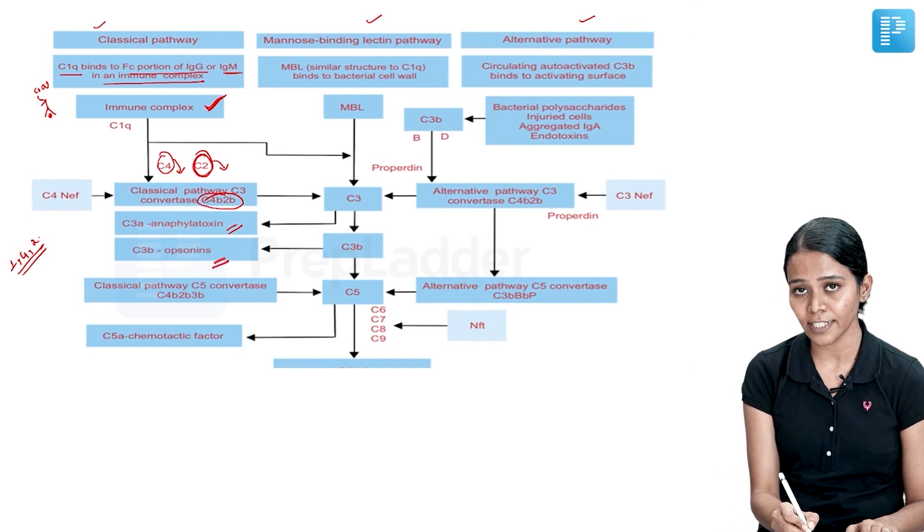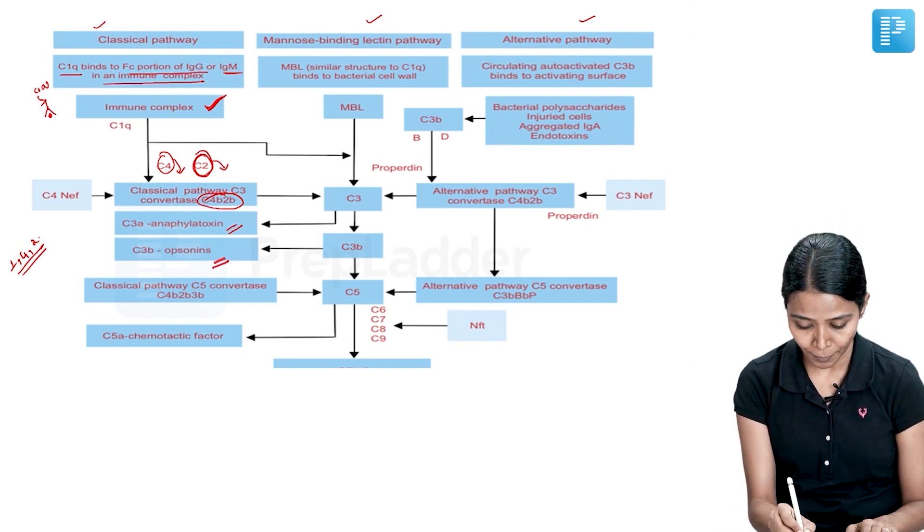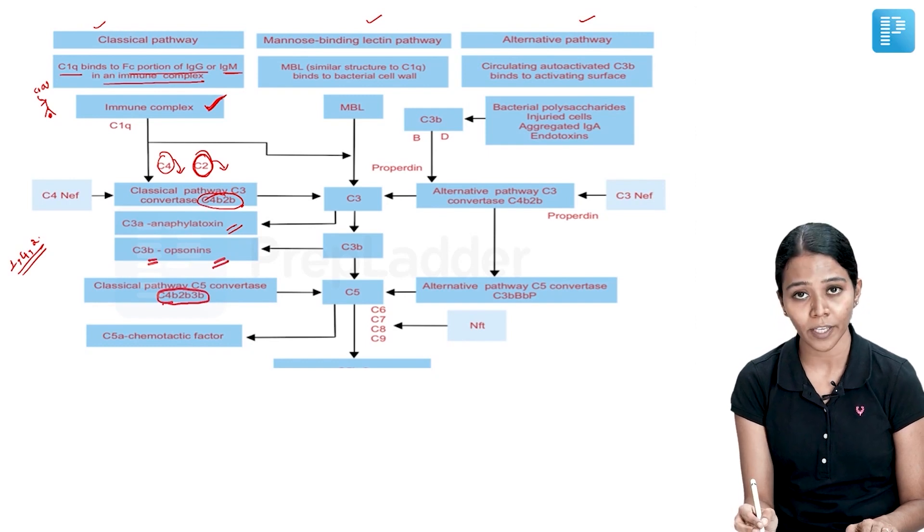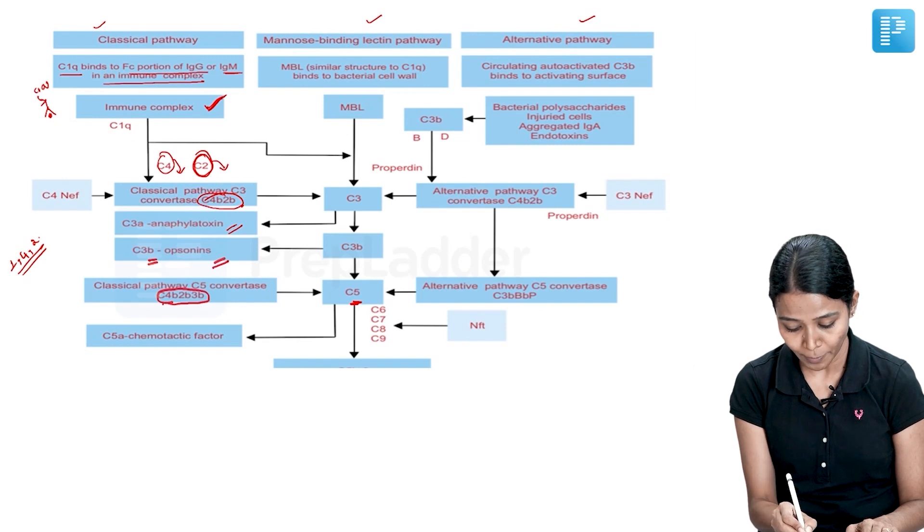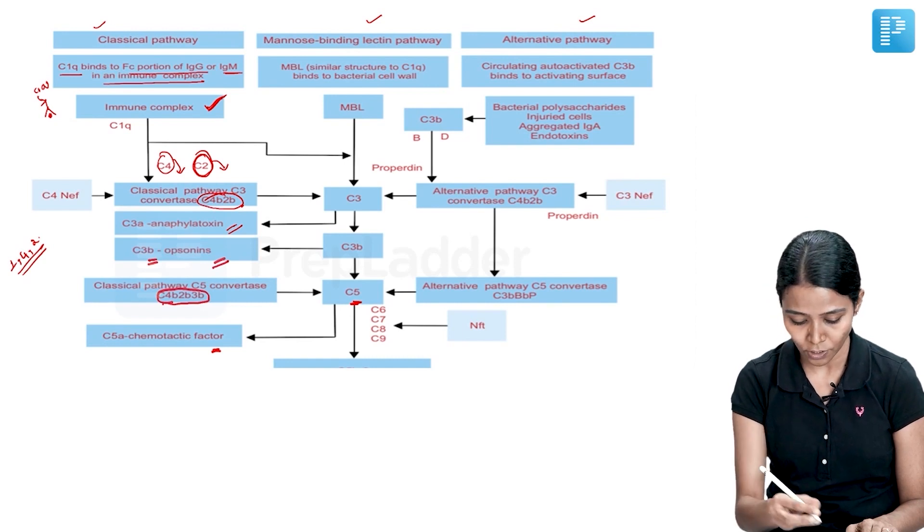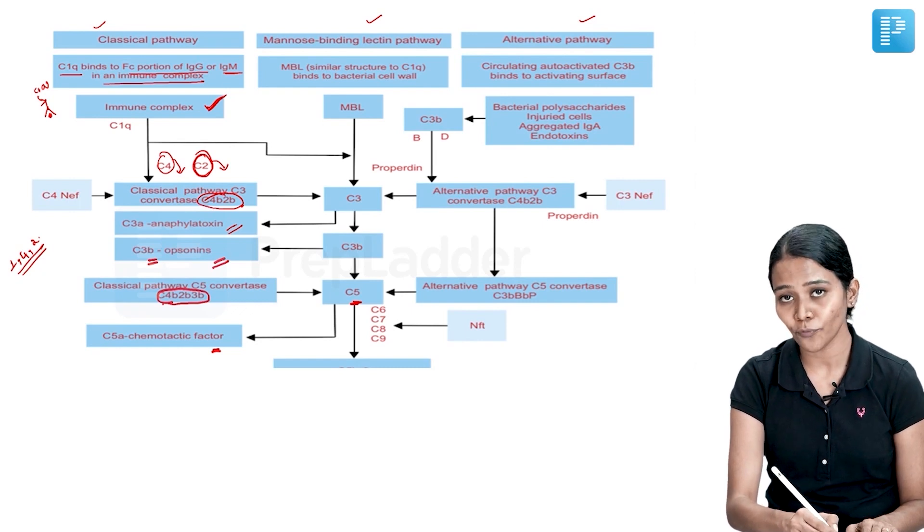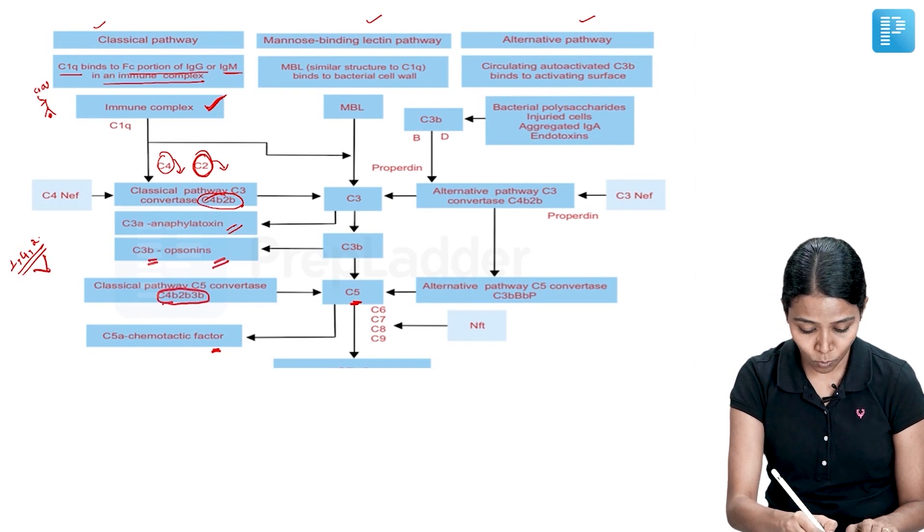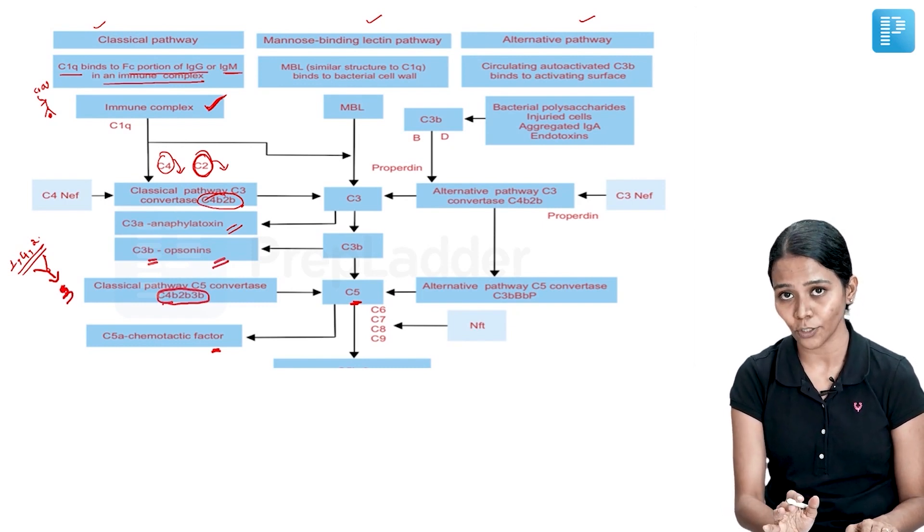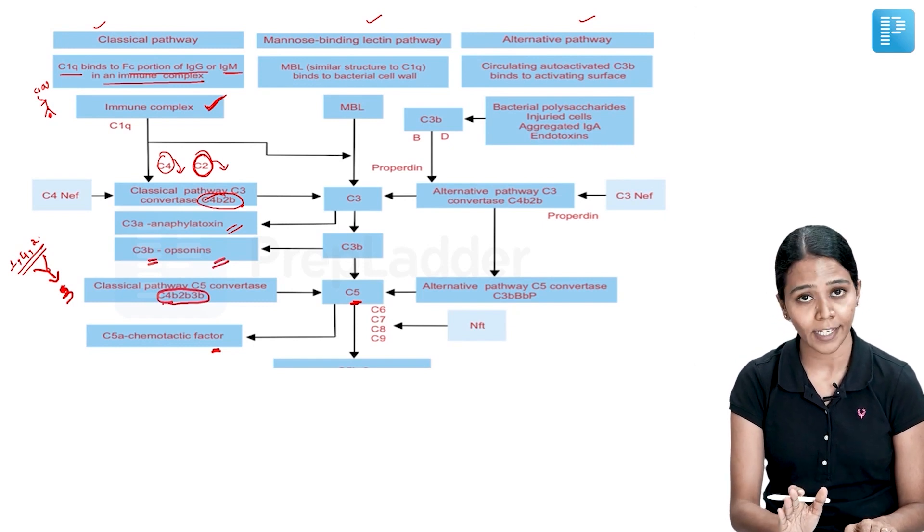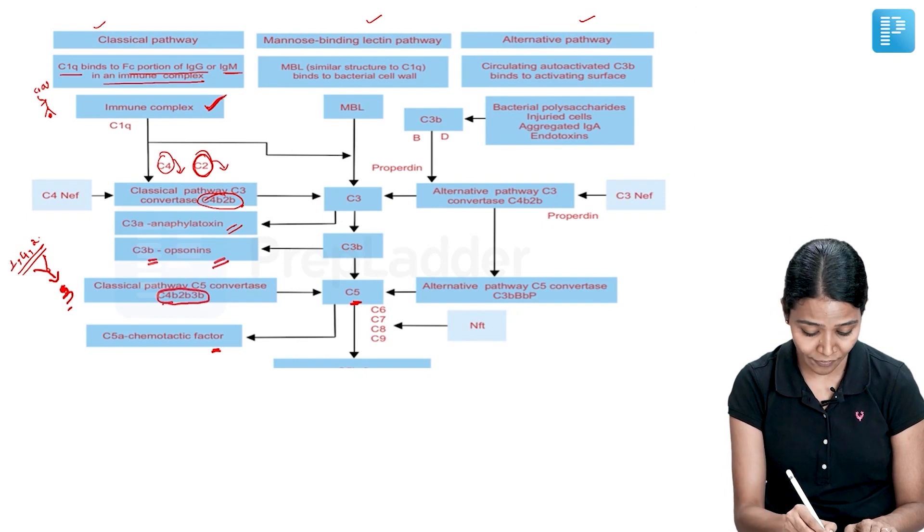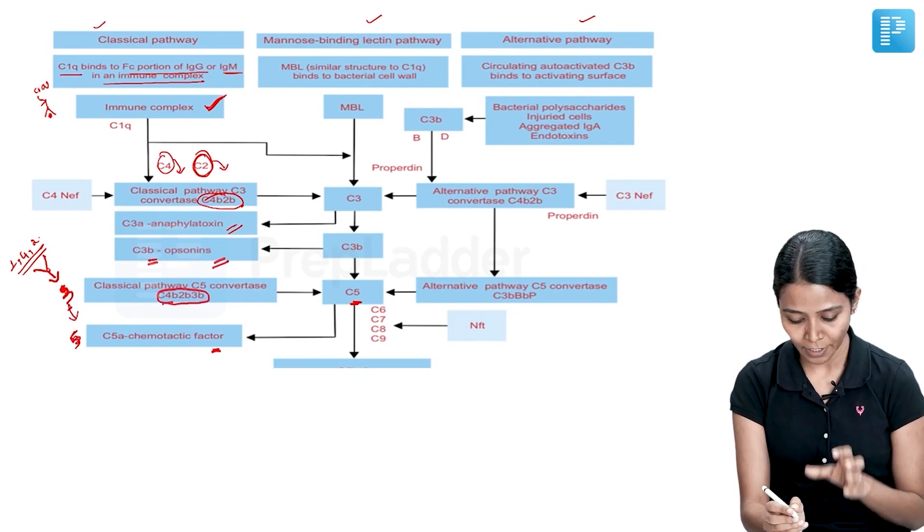In this, again this next forms C5 convertase, that is C4B and 2B binds to C3B. C4B, 2B and 3B forms C5 convertase. Once this goes and binds to the C5, C5 becomes 2 things: one is C5A which is chemotactic factor and C5B to 9 that forms the membrane attack complex. So 1 goes and stimulates 4 and 2, 4B and 2B forms C3 convertase which goes and activates the C5. So 1 activates 4 and 2, C4B and 2B forms C3 convertase. So this goes and acts on C3. C4B, 2B and 3B forms C5 convertase which acts on C5 which produces C5 to 9, that is membrane attack complex.